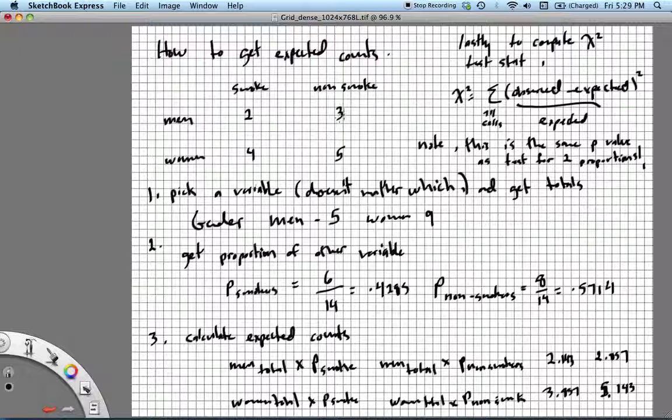Two plus three is five, plus five is ten, plus four is fourteen. So we take our proportion of smokers, and we calculate it to be 0.4285, and the proportion of non-smokers was 0.5714.